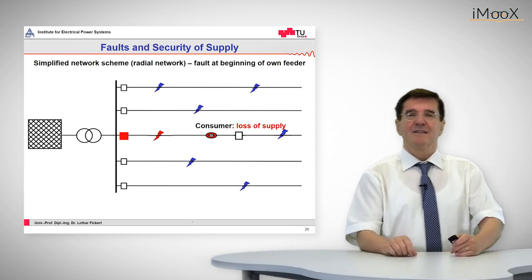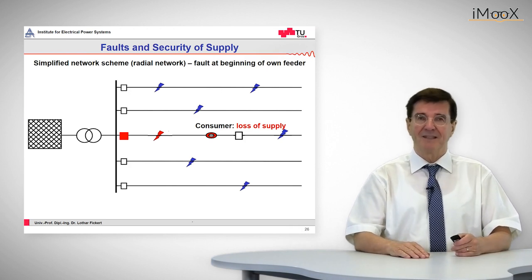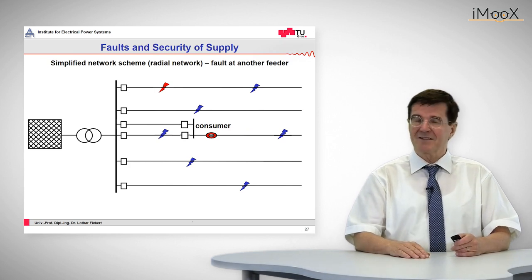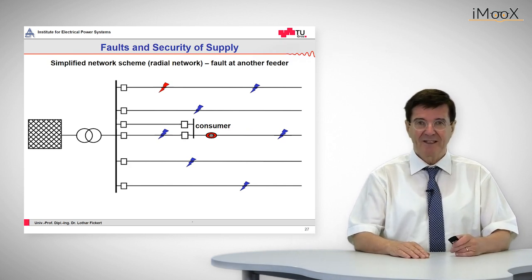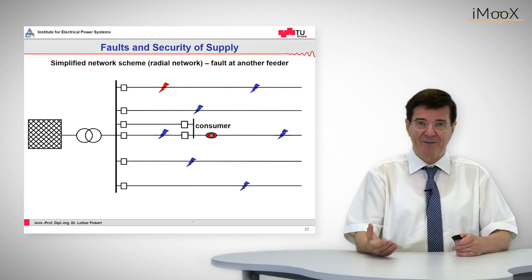In this case, the precautions and countermeasures should be made by the network design. We have to install a second line to make the supply more redundant. Now let's see what happens if this fault happens again after this network expansion.